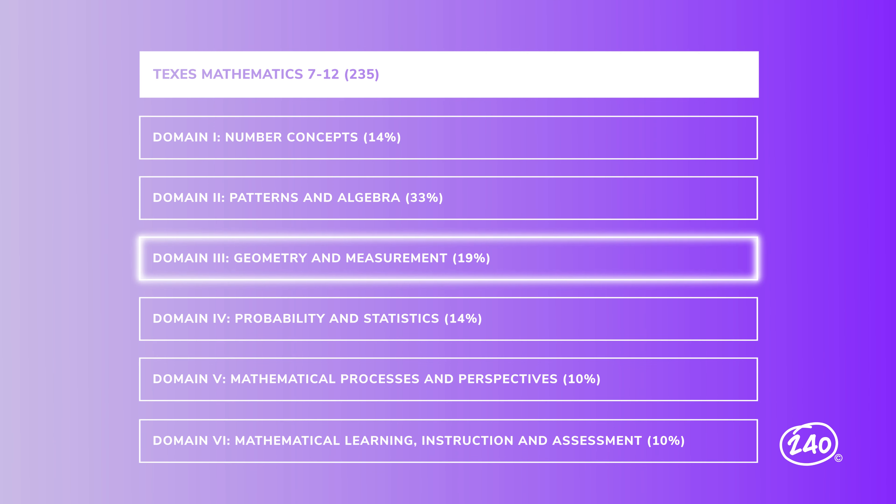Next up is geometry and measurement. This will cover geometry, spatial reasoning, measurement concepts, and principles and technology appropriate to teach the statewide curriculum. This is our second largest section, but luckily it only comes with four competencies.